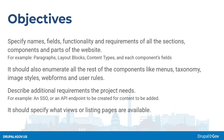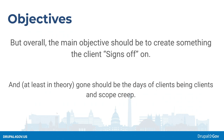So in the objectives of this build spec — what did I want to do? Think about the functionality and requirements of all the sections and components of the site. For example, we use paragraphs a lot, so: paragraphs, layout blocks, content types — what are the fields? What is the functionality expected of them? What are the display modes of each content type? It should also enumerate all other components like menus, taxonomy, image styles, web forms, and user roles. Describe additional requirements like SSO, API endpoints, and specify the views and listings. But overall, the main objective is to have something that the client signs off on — that's the key.